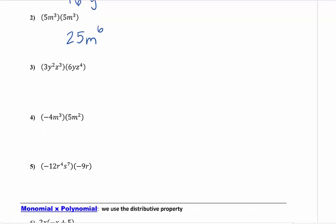Number 3, we now have 3 different pieces. So 3 times 6 is 18. If it helps put a 1 there, we have 2 plus 1, which gives me y cubed. And we have 3 plus 4, which gives me z to the 7th. That's my answer.